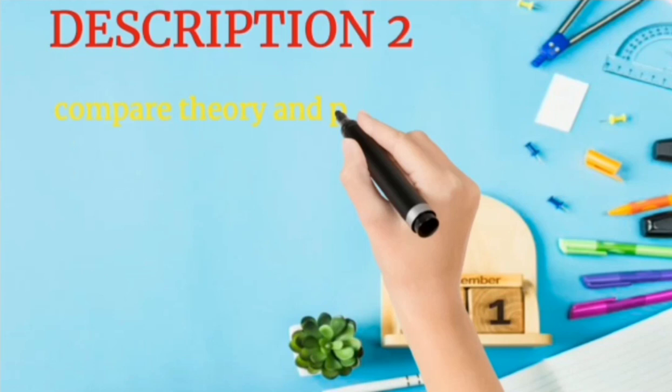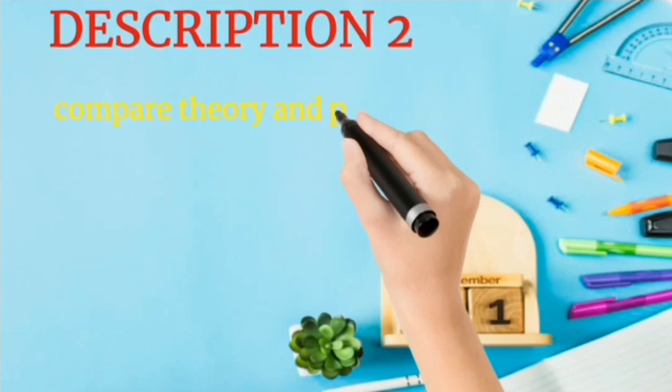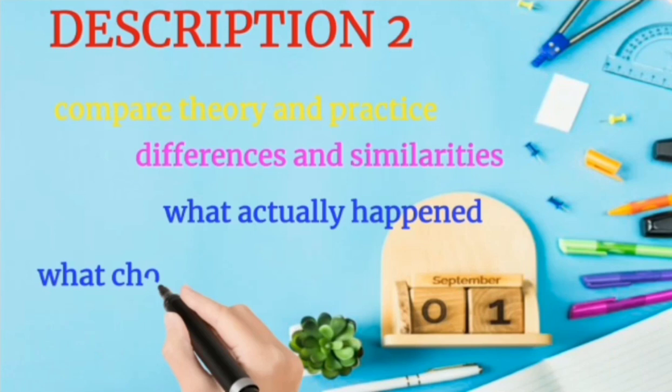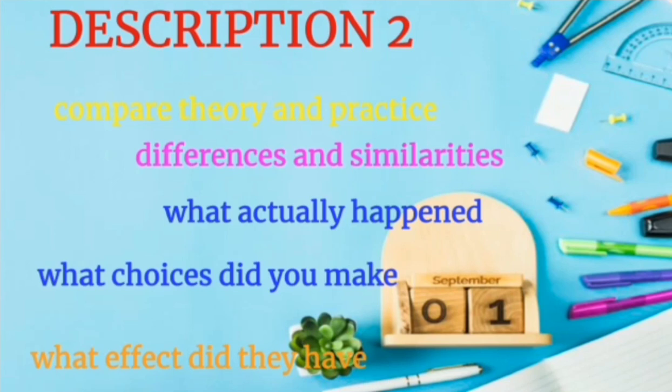Let's move on. What is the next point of the cycle? The next point is evaluation, which we also call analyzing. You have to compare your theory and practice. Whatever you have written, whatever you have thought, was it put into practice? If you have given speeches before, what is the difference between your previous speech and this speech? What are the differences and similarities? What did you have to do? What choices did you have to make?